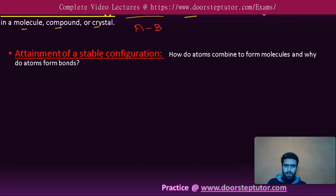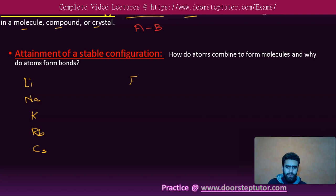Let us learn this concept. As we know, in the periodic table, in the first group we have alkali metals like lithium, sodium, potassium, rubidium, and cesium. Similarly, in the P-block elements, we have Group 17 elements: fluorine, chlorine, bromine, and iodine.